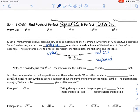So the index indicates which exponent it undoes. If there's a 2, it undoes the exponent of a 2. If there's a 3, it undoes the exponent of a 3.